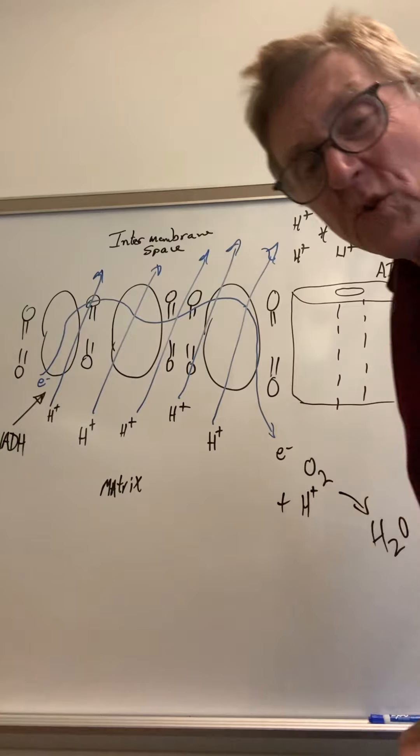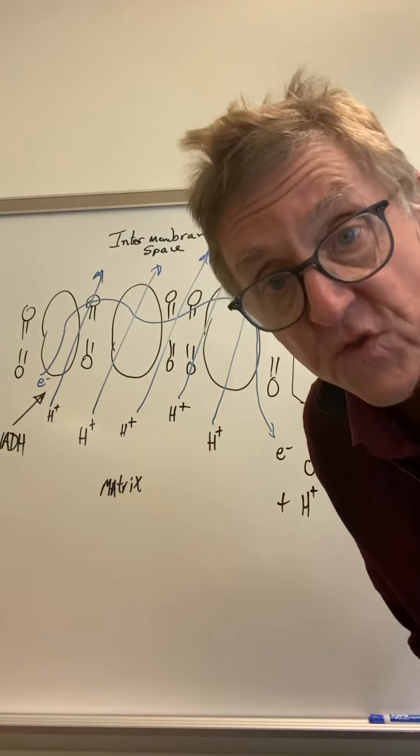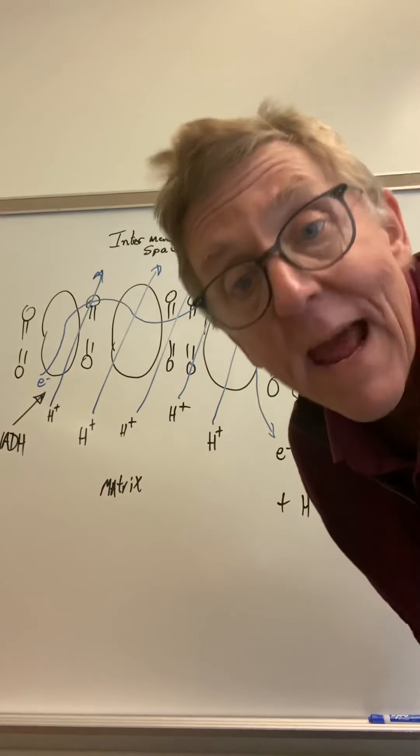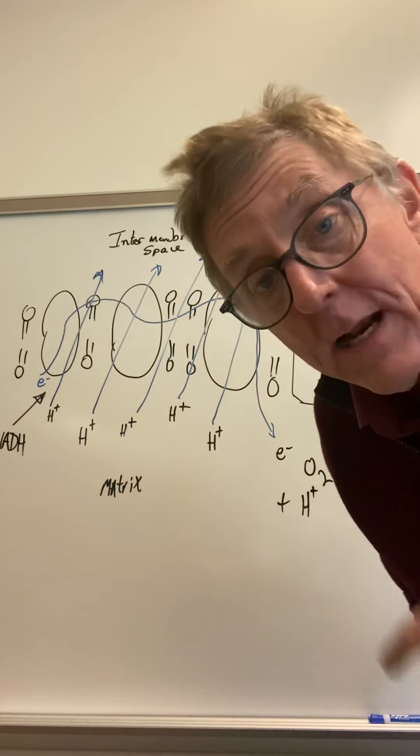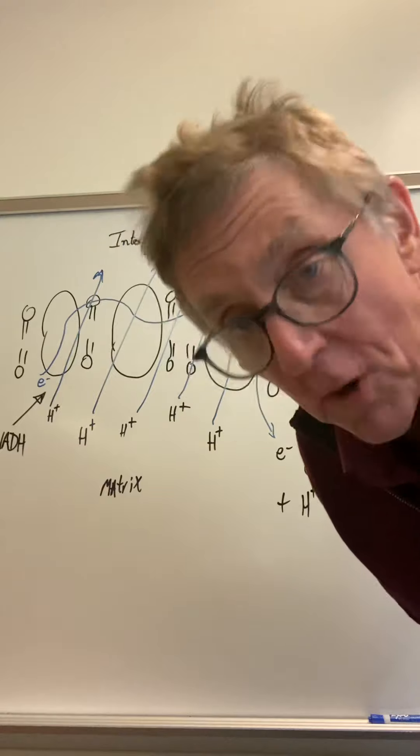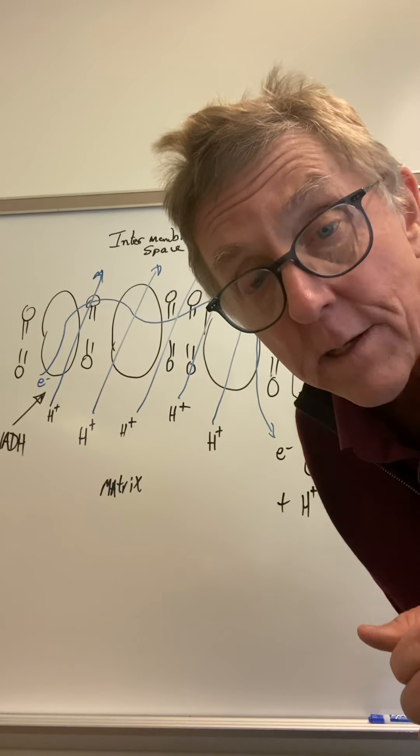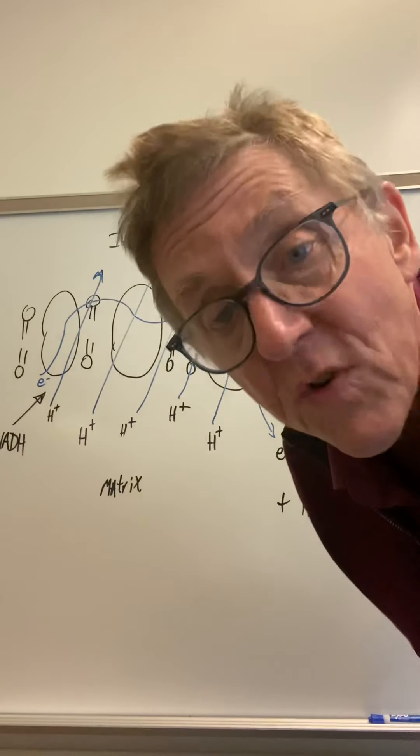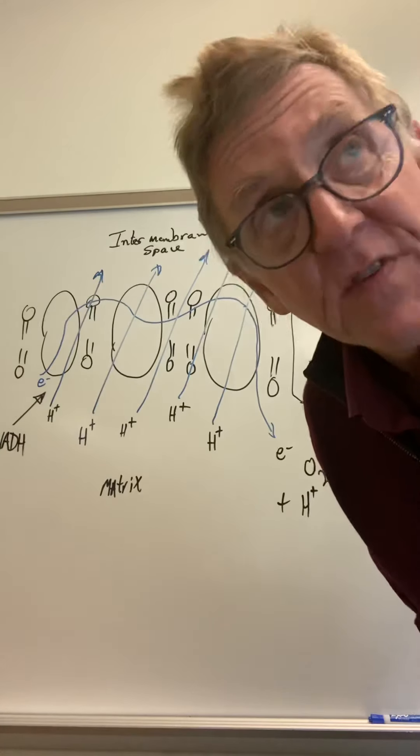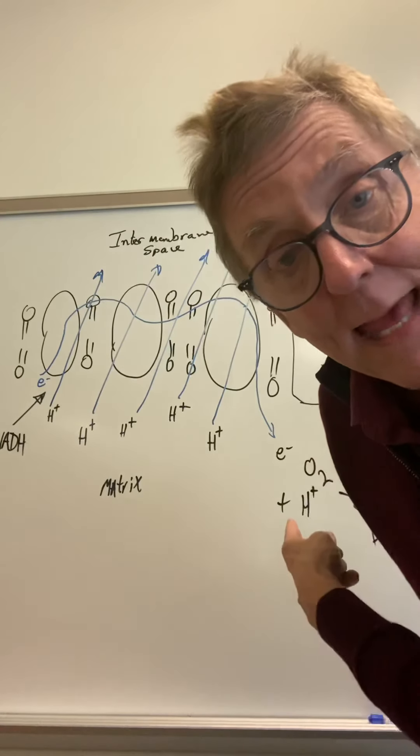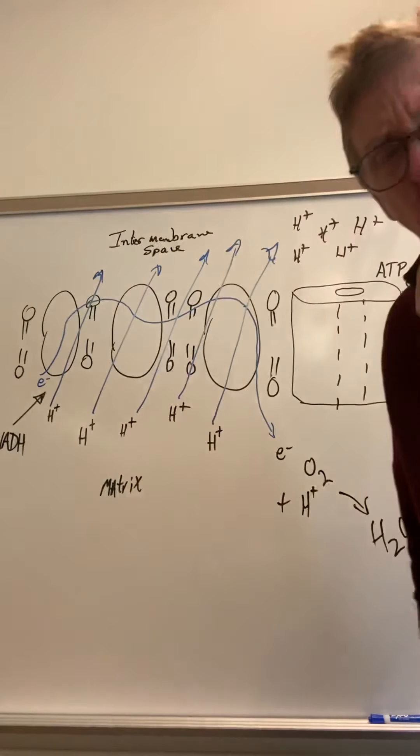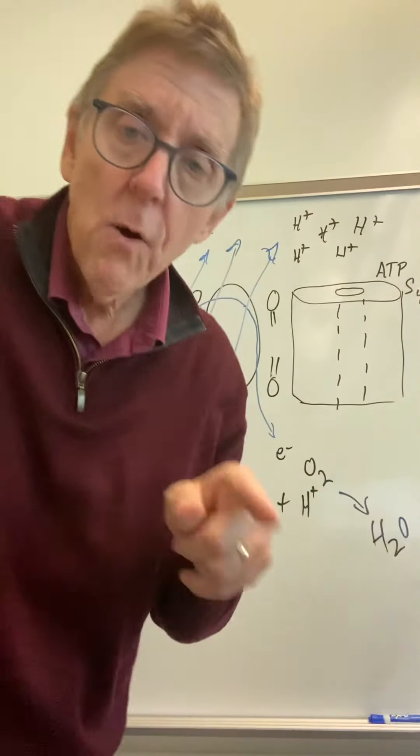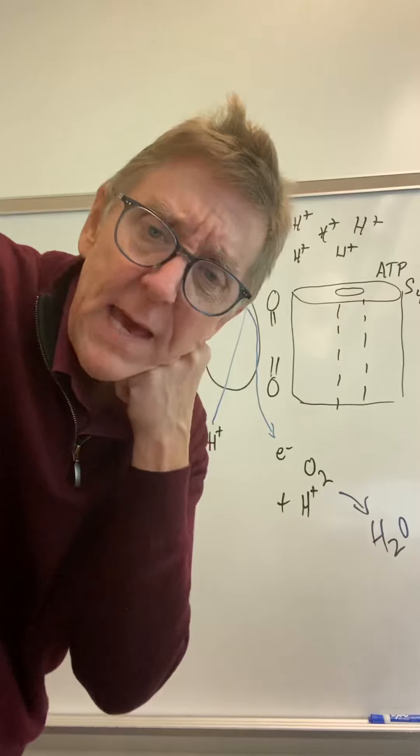So two hydrogen ions plus one oxygen: H2O—everyone knows that's water. You make water in this process. So the final electron acceptor—that's an important point—the final electron acceptor in cellular respiration is oxygen. That's its job. Okay, but we said we're going to make a whole lot of ATP.